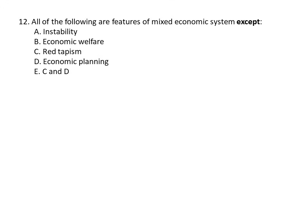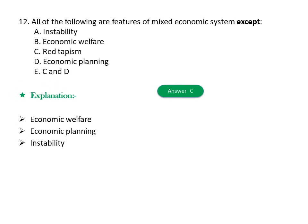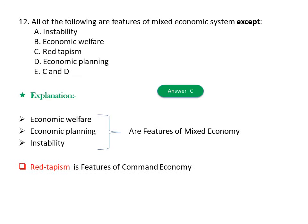Question twelve: The following are features of a mixed economic system except one. A) Instability, B) Economic welfare, C) Rapid growth, D) Economic planning, E) C and D are the answer. The answer should be C. Explanation: Economic welfare, economic planning, and stability are features of a mixed economy, whereas rapid growth is a feature of a command economy.